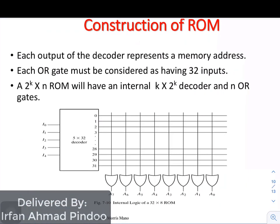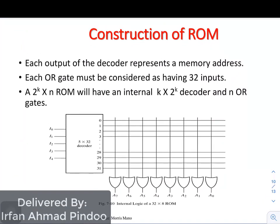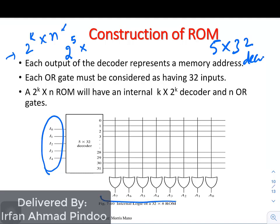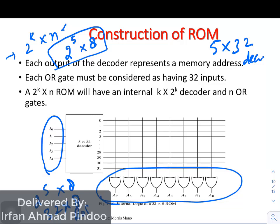Now to understand how it works we will consider one example. In this example we are implementing 2 to the power k into n and we are having a 5 cross 32 decoder. So the number of input lines you can see here is 5. We are having 2 to the power 5, and n indicates number of outputs. How many outputs are connected here? There are 8 OR gates. So it is 2 to the power of 5 into 8. So suppose they ask you what is the size of this particular ROM. The answer is 2 to the power 5 into 8, that is 32 cross 8 ROM.